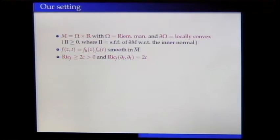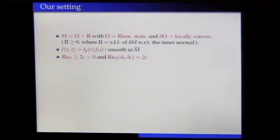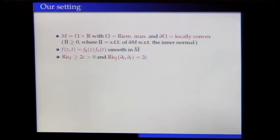We consider a Riemannian cylinder over an arbitrary Riemannian manifold, possibly with locally convex boundary. Inside this Riemannian cylinder we take a product density — a horizontal factor and a smooth positive vertical one — and we assume that our product densities have a positive lower bound on the Bakry-Emery Ricci curvature which is achieved for the vertical killing field.